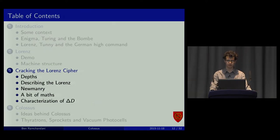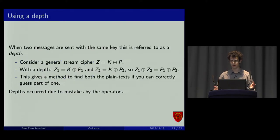On to how we crack this. The first method generally applies to any stream cipher. A depth. If two messages are sent with the same key, you can XOR them together. The key part disappears. And then you get this formula. If you can then guess just a bit of one of the plaintexts, you can see what the other plaintext would have to be. If that's sensible, you carry on. You probably guessed right.